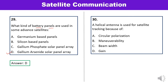Question 30: A helical antenna is used for satellite tracking because? In a helical antenna, the diameter and pitch of the helix are comparable to the wavelength and it radiates circularly polarized radio waves. That is the correct answer.